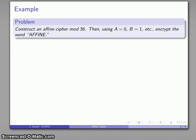So for example, let's construct an affine cipher mod 36. So that gives us the 26 letters of the alphabet plus 10 numerical symbols. And then I'll use my standard values A equals 0, B equals 1, and so on. And I'll encrypt the word AFFINE.